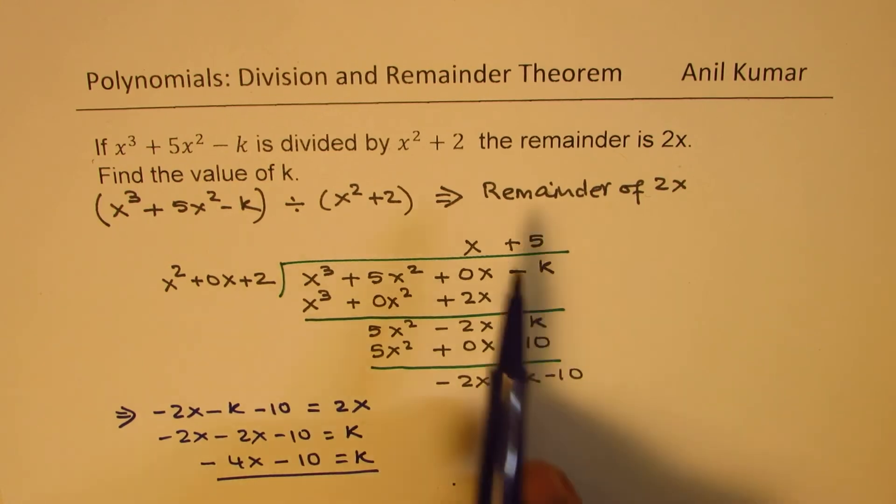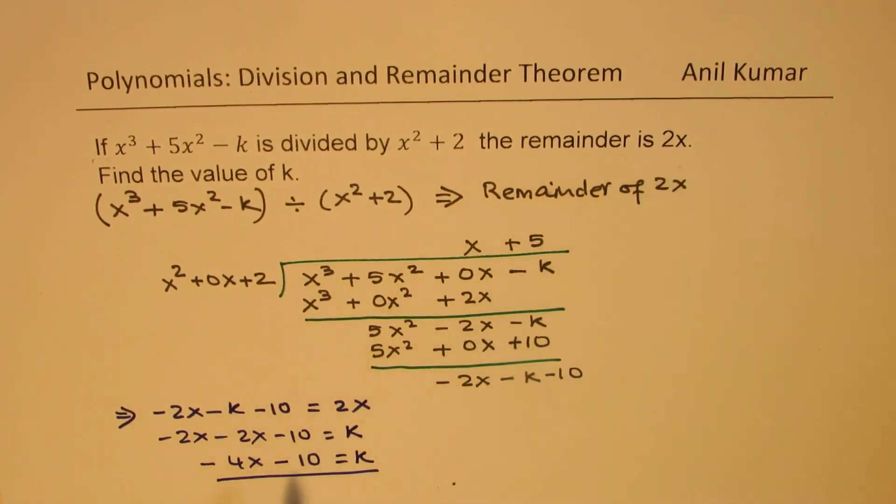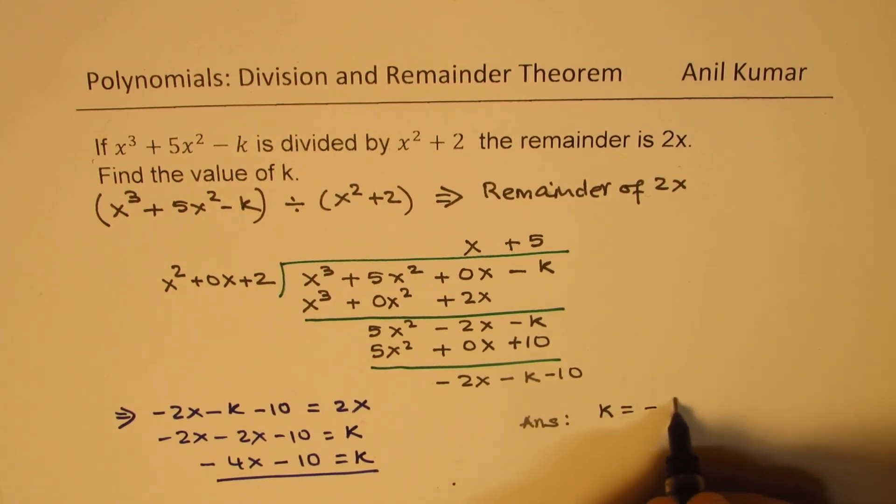Now, since the remainder is 2x, that is what the value of k will be. So we can now write down our answer. And the answer is that k is equal to minus 4x minus 10. Perfect.